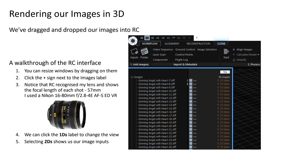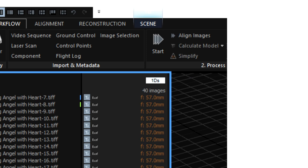This is the interface after inputs have been added to the project. Note that you can resize windows whenever you want by dragging on their borders. You may need to click the plus next to the image label to view your inputs. These images were shot at 57mm, as shown on the right of the file names. I find this lens particularly ideal as it has close focus, can go wide, and also zoom when necessary — it's sharp and bright. It's the Nikon 16-80mm and has effectively replaced all my other lenses.